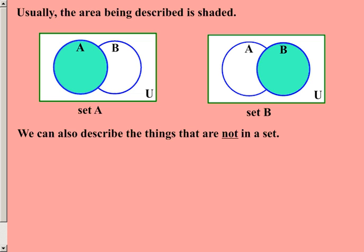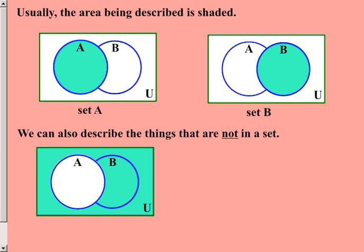One of the things that Venn diagrams allows us to do is to also visualize what something would look like if we were interested in not seeing information that's in a particular set. So for example, here what you have is basically the inverse of what is directly above it. This time, the set A is not shaded, yet everything else is. This would be a pictorial example of not A.